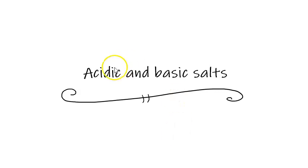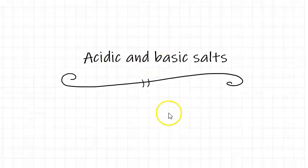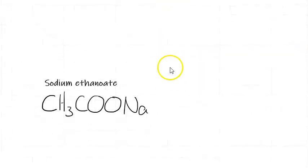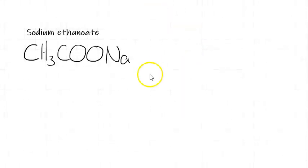Kia ora tātou. In this video we will look at acidic and basic salts. A salt is basically anything that's made up of an anion and a cation.